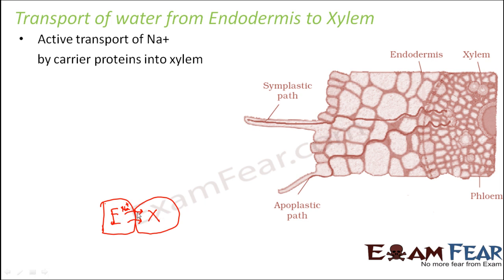As more and more sodium ions enter xylem, the solute concentration increases, so the solute potential becomes more negative. As a result, the water potential decreases in the xylem. Therefore, when we talk about osmosis, water starts moving from endodermis to xylem. The water movement from endodermis to xylem is entirely governed by this active transport of ions by carrier proteins into xylem.